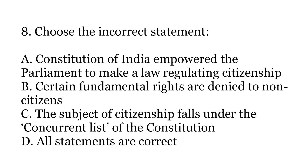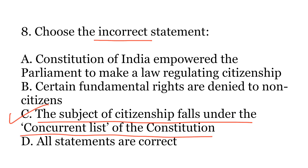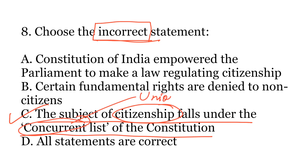The 8th question is: choose the incorrect statement. The options are A. The Constitution of India empowered the parliament to make a law regulating citizenship. B. Certain fundamental rights are denied to non-citizens. C. The subject of citizenship falls under the concurrent list of the constitution. Or D. All statements are correct. The correct option is C, because the subject of citizenship does not fall under the concurrent list — rather it falls under the union list. That is why parliament has the exclusive prerogative over any provisions of citizenship under Part 2 of the constitution.